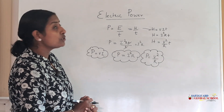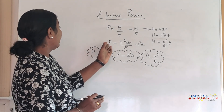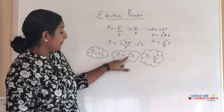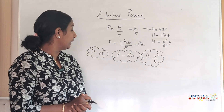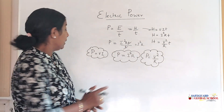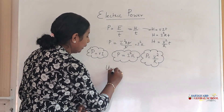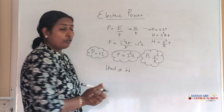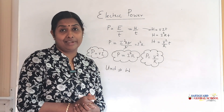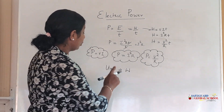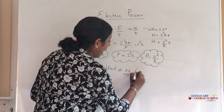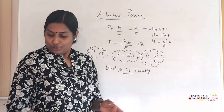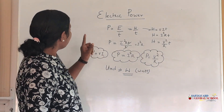Now we will find the unit of power. From the relation P = V×I, the unit is volt times ampere, or from P = I²R it is ampere squared times ohm. The SI unit of power is the watt, named to honor James Watt. It can also be expressed as joules per second, but we write it as watt, abbreviated as capital W.